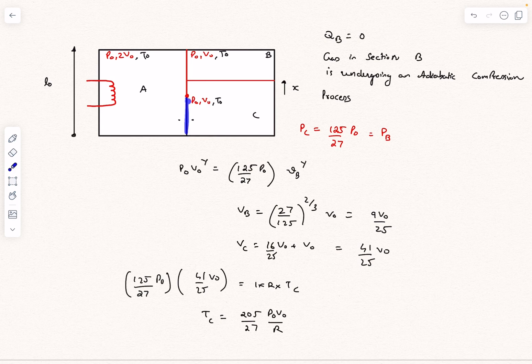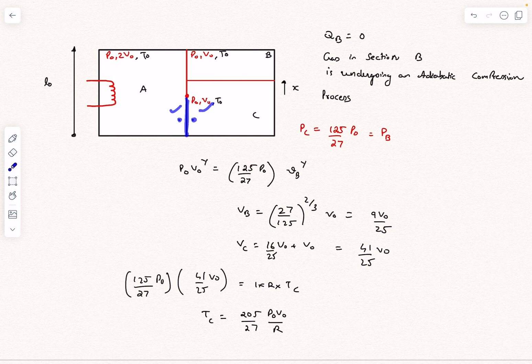Also, this section of the wall is given to be conducting, meaning whenever there is a temperature difference between section A and section C, heat transfer from section A to section C quickly brings the temperature difference to zero. Essentially, the temperature in section A and section C are always the same, and that's the whole purpose of having a conducting wall.